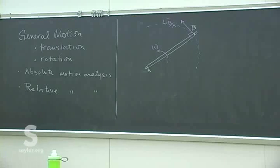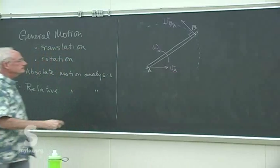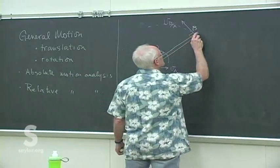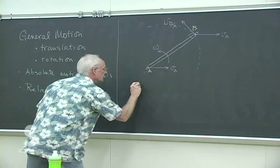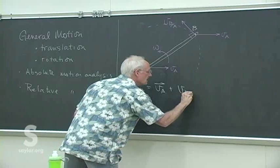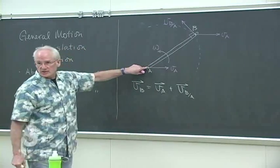What we're adding to this now is the possibility that A itself might have some velocity. So the complete velocity of point B is not just the relative velocity as it goes around A, but the fact that A is also moving - so we add that to it. The velocity of B is the velocity of A plus the fact that B is moving around A.